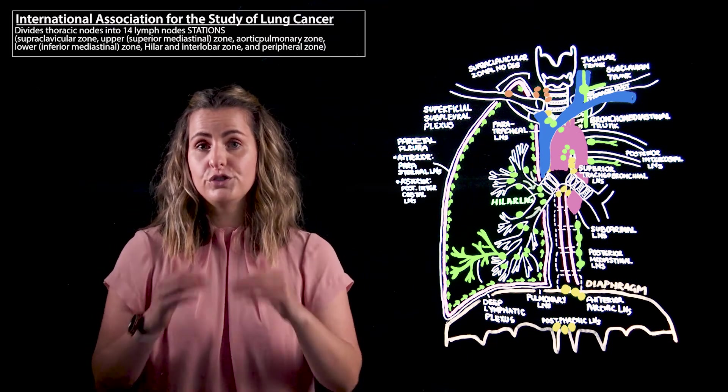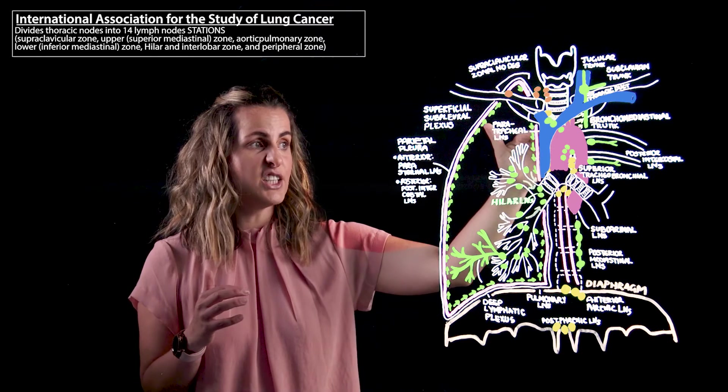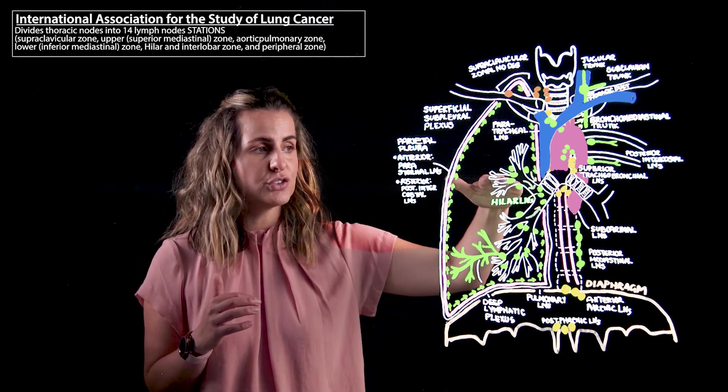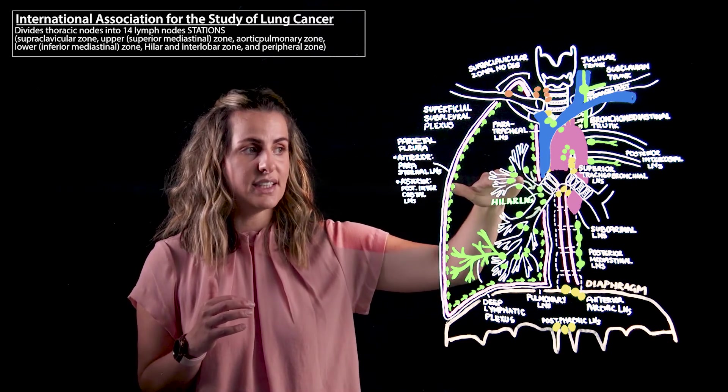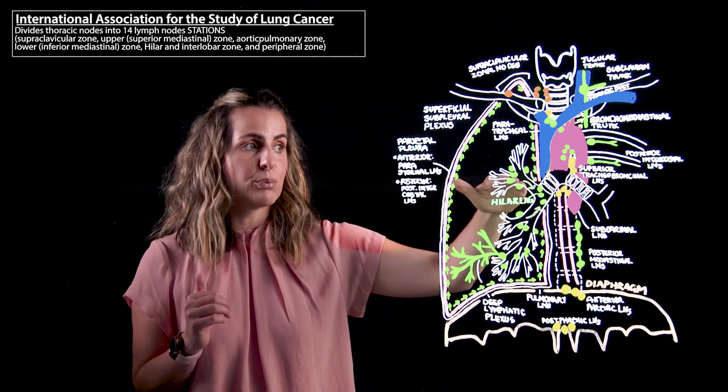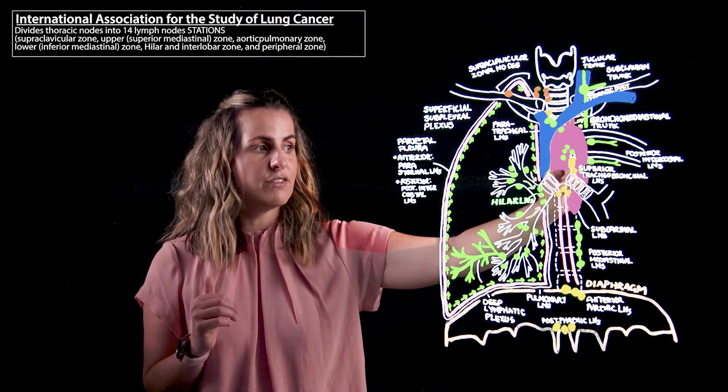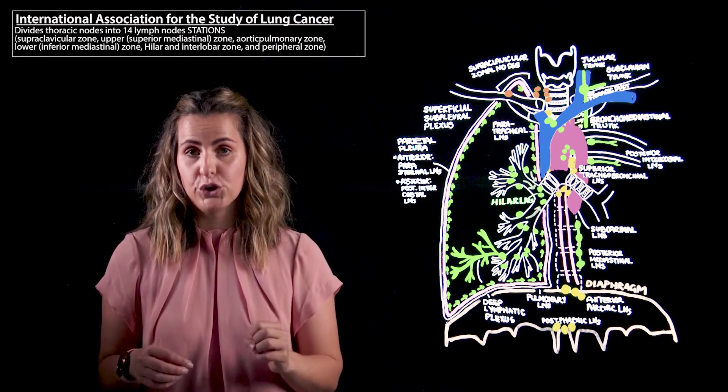If we then move just below that upper margin of the aortic arch and if we had to draw a horizontal line approximately intersecting the upper lobar bronchus, in this space we'll then find those superior tracheobronchial lymph nodes.